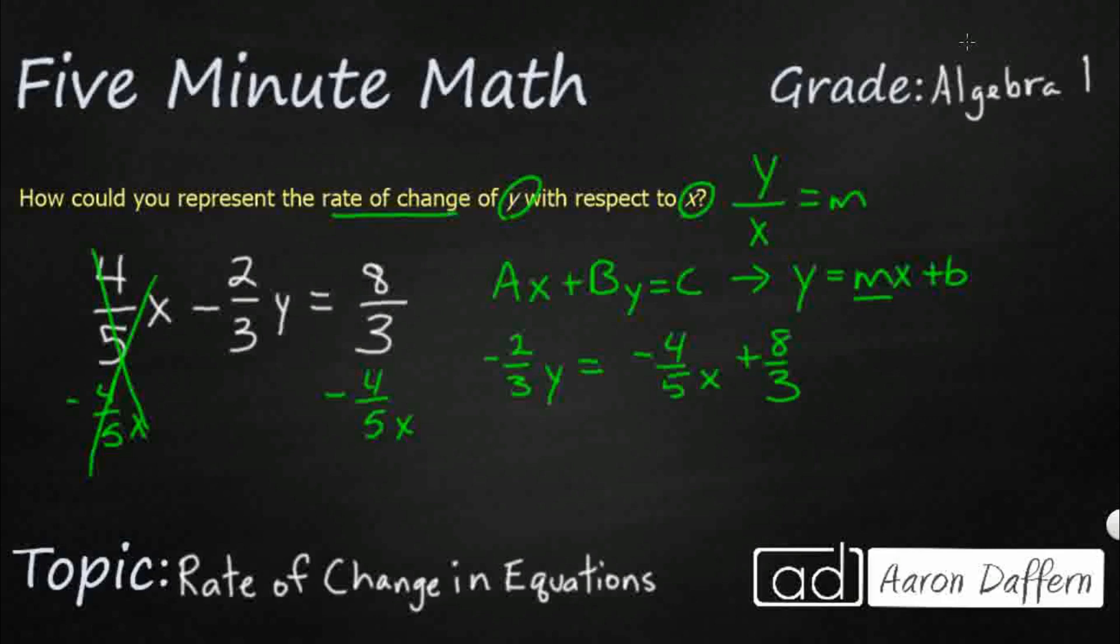Now, when I want to solve for that y, what I need to do is I need to multiply by the reciprocal. So it's negative 2 thirds, so I need to instead multiply by negative 3 halves because then that's going to cancel out, and that's just going to leave me with y. But now I've got to multiply the other side by that negative 3 halves.